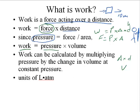So as you can see in this bullet right here, work can be calculated by multiplying the pressure by the change in volume at a constant pressure. Now we're going to get a unit here, which is a liter-atmosphere. So if you can imagine, pressure is in atmospheres and volume is in liters. Why it's called liter-atmospheres, not atmosphere-liters, I don't know, but most of the textbooks call it a liter-atmosphere.